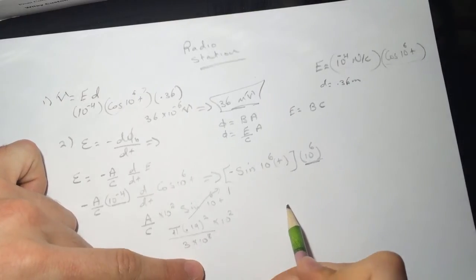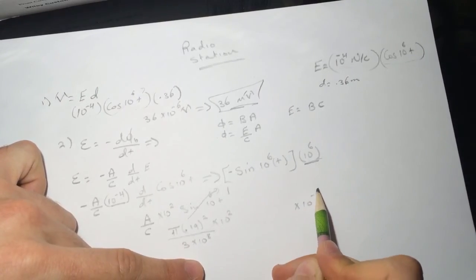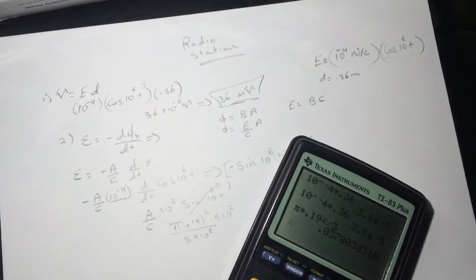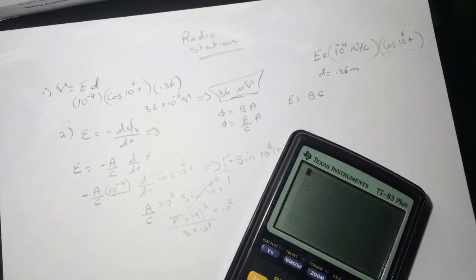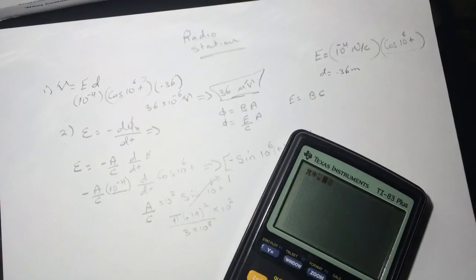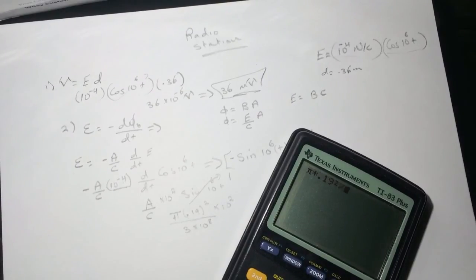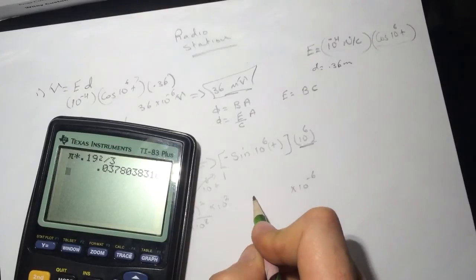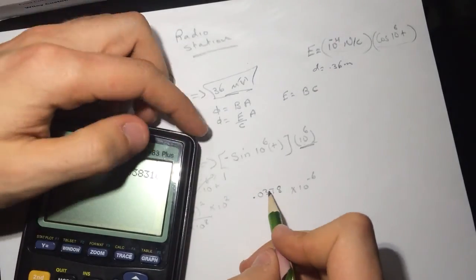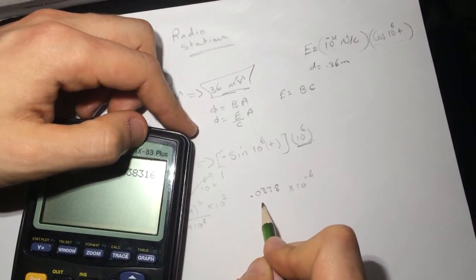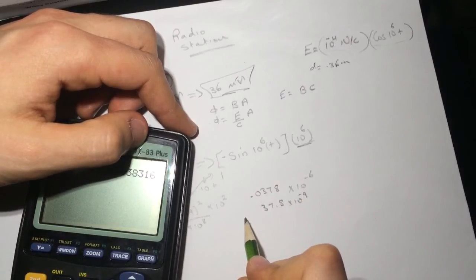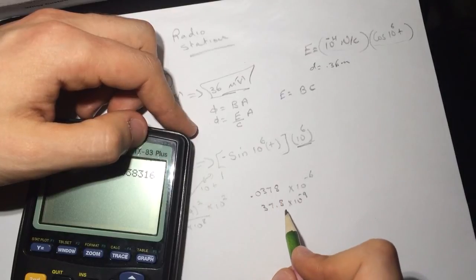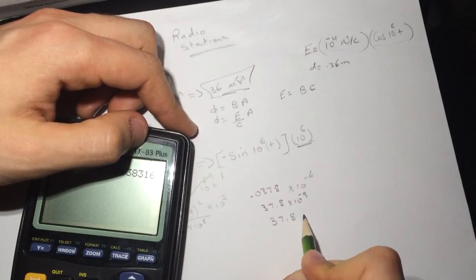Divided by c, which is 3 times 10^8, times 10^2. Let's calculate: pi times 0.19 squared divided by 3 gives 0.0378, so 37.8 times 10 to the negative 9, multiplied by 10 to the negative 6. The answer they want is in nanovolts, so the answer is approximately 37.8 nanovolts.